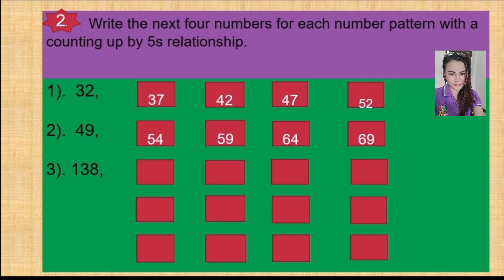Next, let us practice again in exercise 3. 138 counted up by 5, or 138 plus 5 — count it yourself, practice by yourself. Let's check: the answer is 143. If you get that, very good — you are very clever! Then from 143 counted up by 5, the answer is 148. Continued: 148 counted up by 5 — 49, 50, 51, 52, 53 — equals 153.